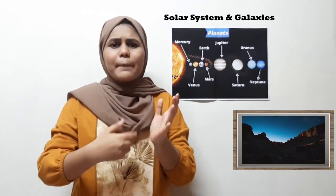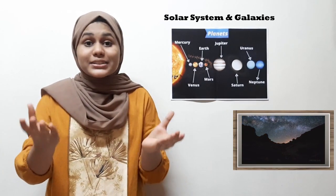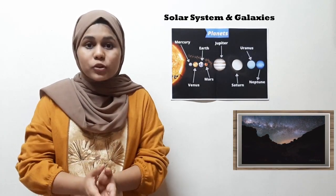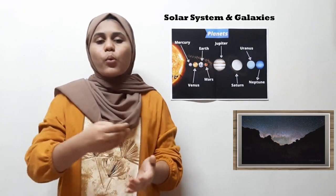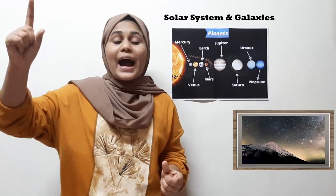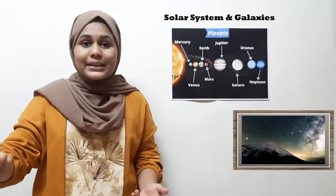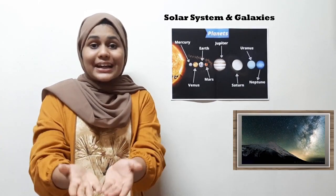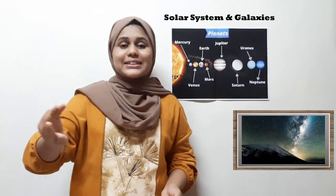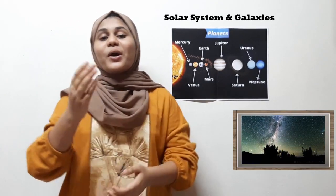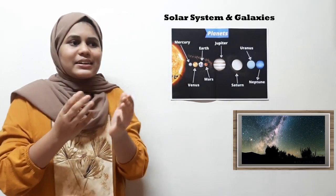Let's recap what we learned about the solar system: first we had planets, then dwarf planets, natural satellites, comets, asteroids, and meteorites. Now, moving on, we're going to look at galaxies.